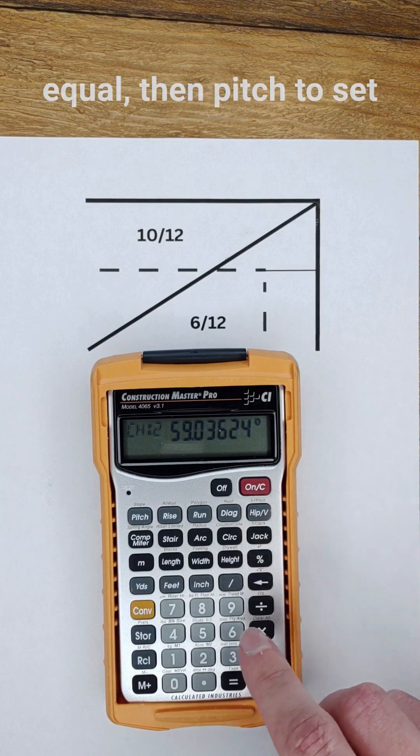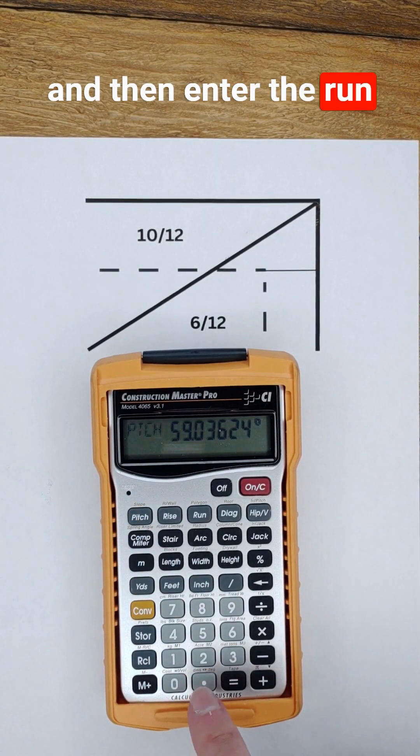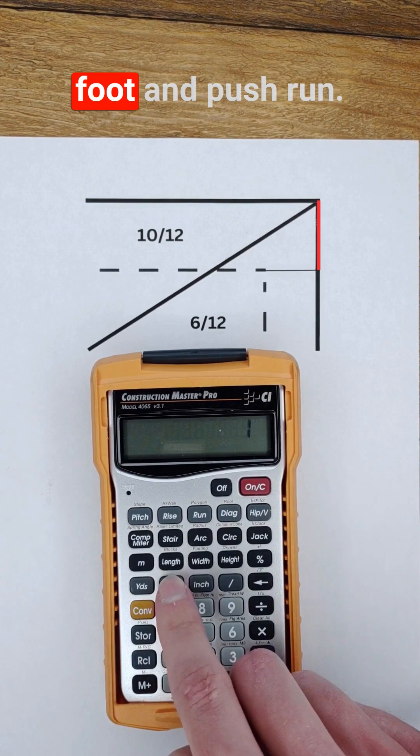Once that angle displays, I want to push equal then pitch to set that as my new angle. And then enter the run of the overhang, 1 foot, and push run.